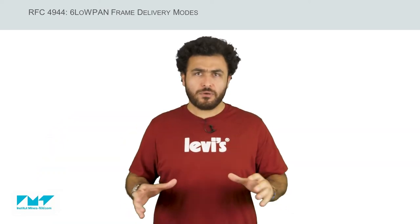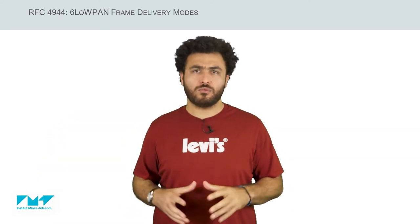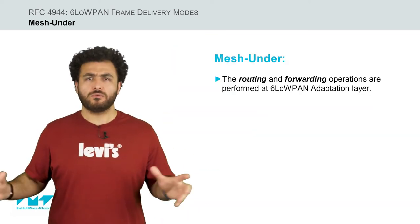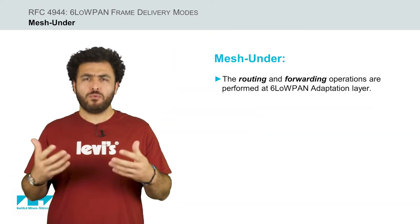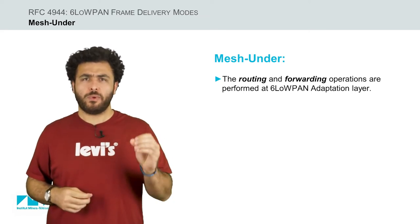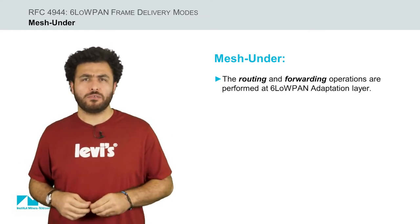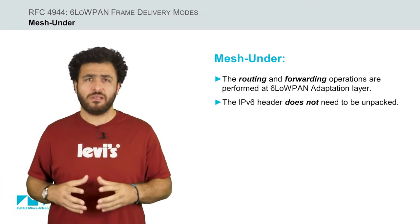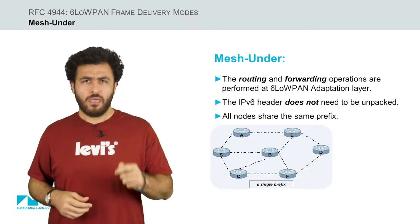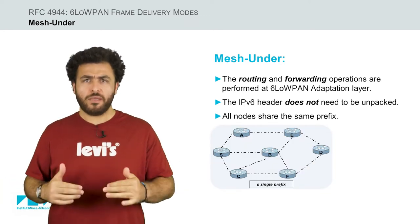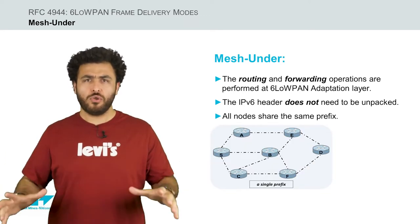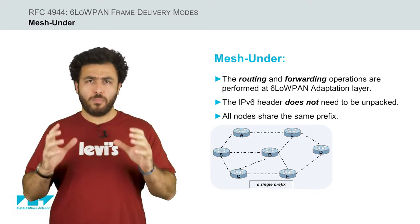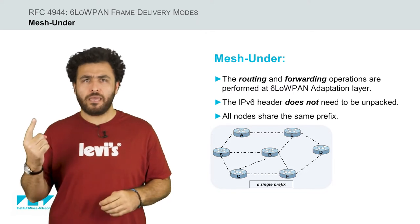Let us now dive deeper to see in detail the two modes. In the mesh under mode, the routing and forwarding operations are performed at the 6LoWPAN adaptation layer based on layer 2 addresses, and thus the IPv6 header doesn't need to be unpacked. The network layer assumes that all nodes share the same prefix, where multiple link layer hops may be employed to complete a single IP hop.